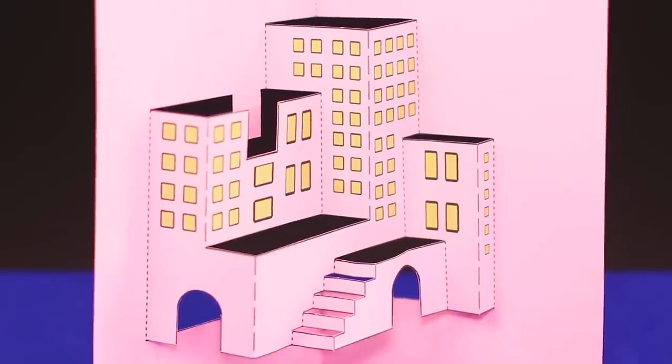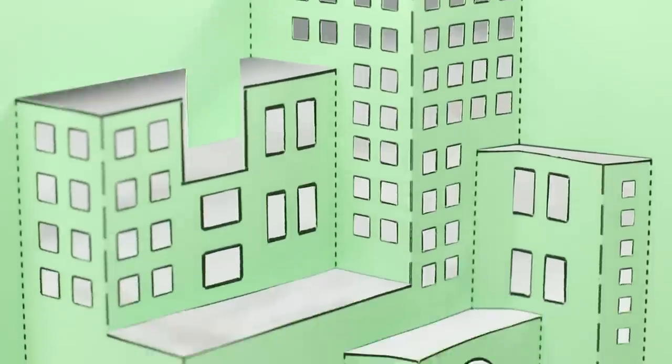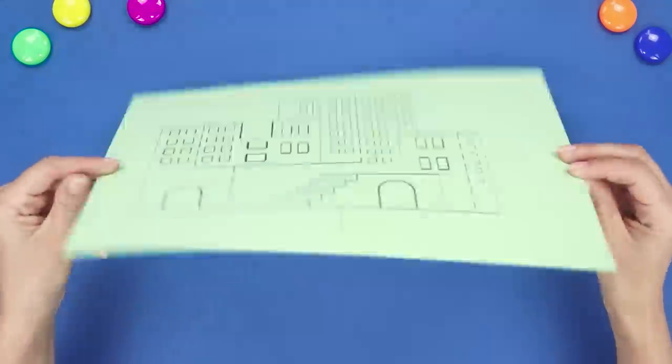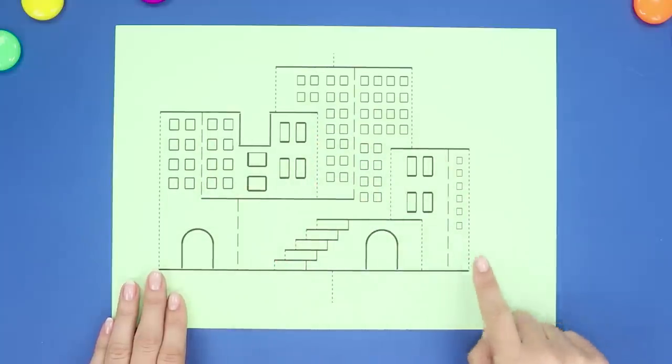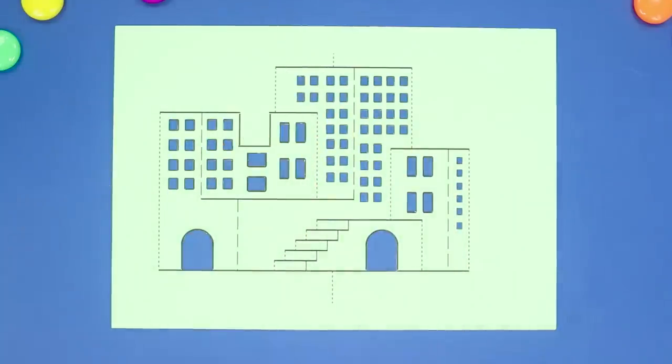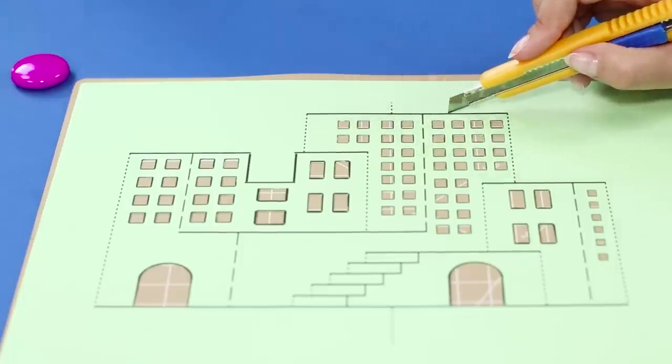And now we will tell you how to build a beautiful voluminous city without a single brick. You definitely will not want to miss this! Draw the outline of a multi-story building on a sheet of paper. With the help of a paper knife, cut out the front doors and numerous windows. Make incisions along the lines marked in the drawing with a thick stripe.